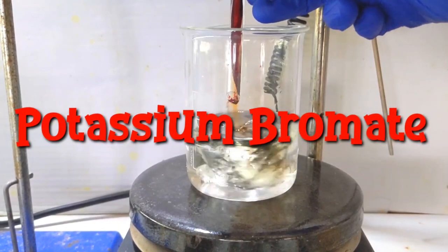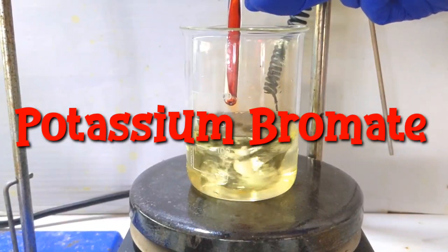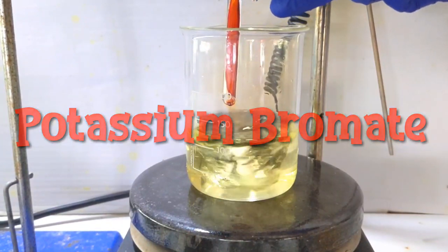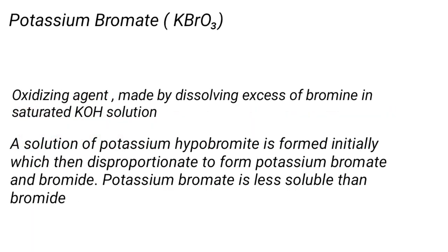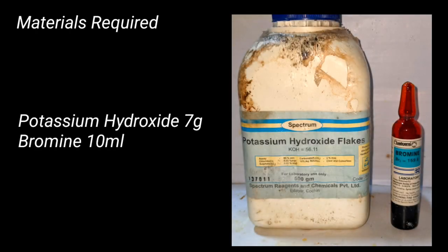Hello friends, in this video we will make potassium bromate. Potassium bromate is an oxidizing agent made by dissolving excess bromine in potassium hydroxide. A solution of potassium hypobromite is formed, which then disproportionates to give potassium bromate and potassium bromide. Potassium bromate is less soluble and crashes out of the solution.